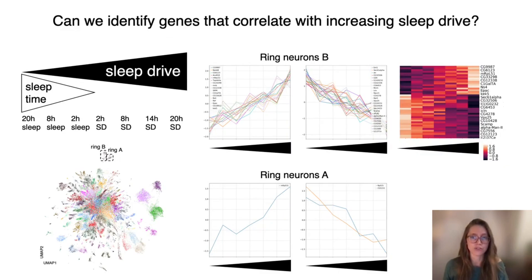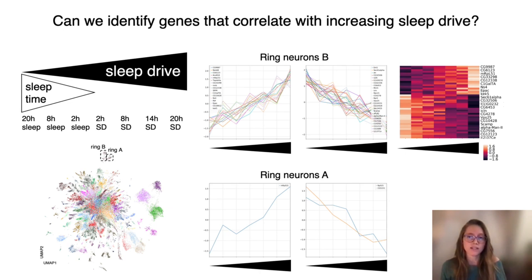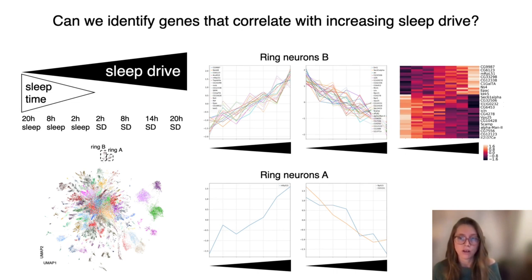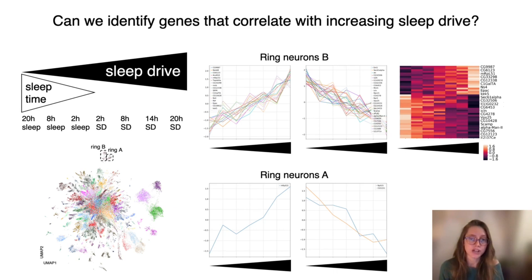So far I've shown differential expression analysis performed between two groups of conditions — sleeping versus waking cells. But our dataset also includes conditions with increasing amounts of sleep deprivation, ranging from 20 to 8 to 2 hours of sleep, and then from 2 to 8 to 14 to 20 hours of sleep deprivation. Therefore, we have started a different kind of analysis to detect changes with increasing sleep drive, by creating a template of those conditions and asking how many genes match with an R-squared of at least 0.8.